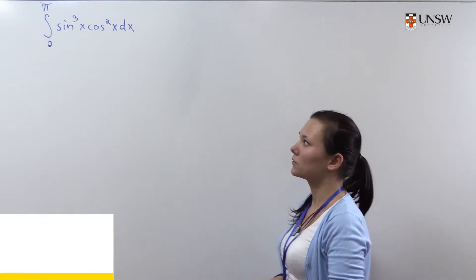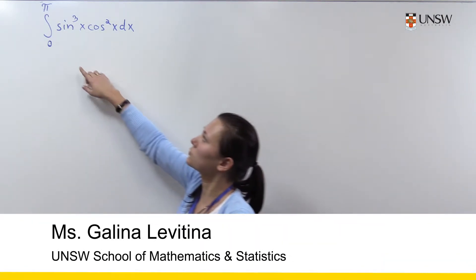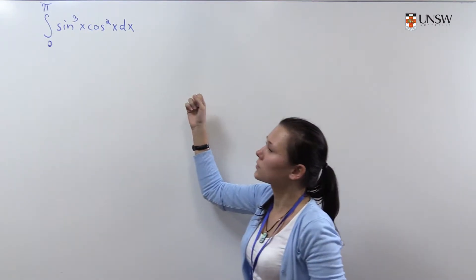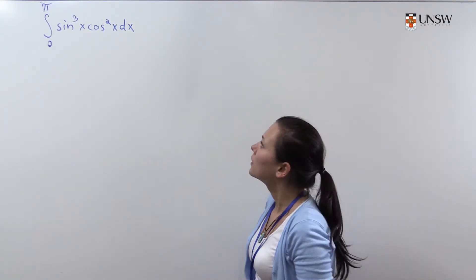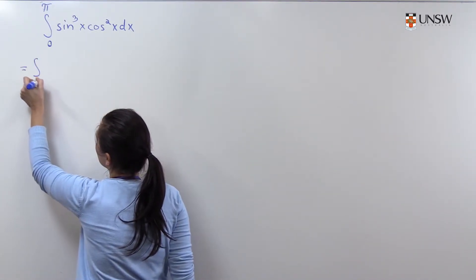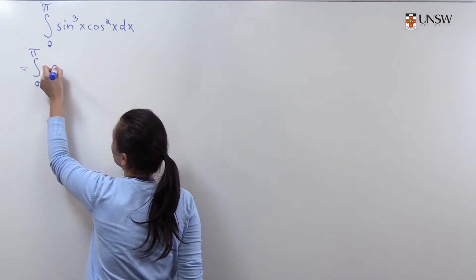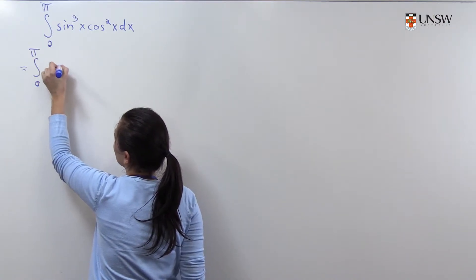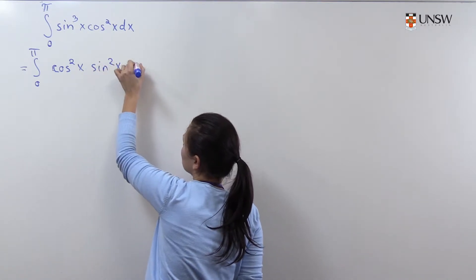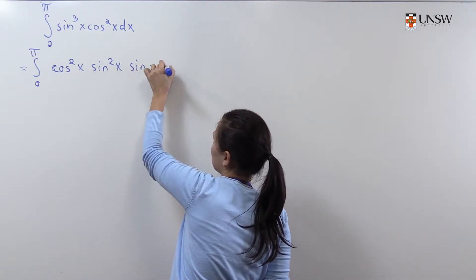In this question we need to evaluate the integral from 0 to π of sine cubed of x times cos squared of x. We firstly write this integral in the form cos squared x times sine squared x times sine x dx.